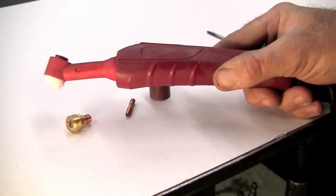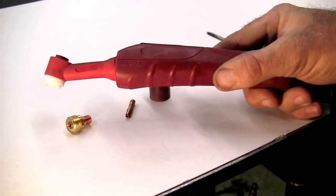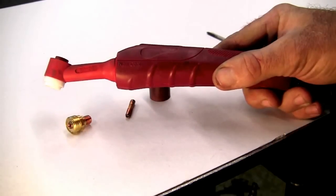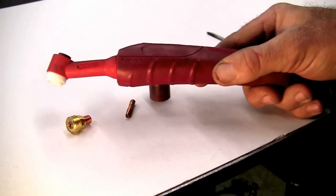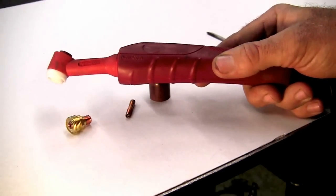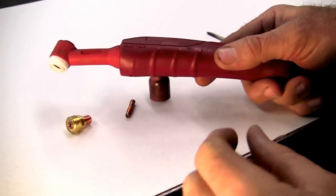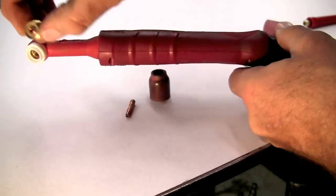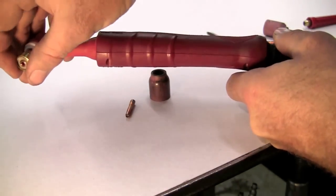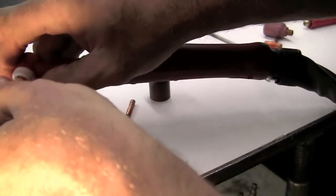Here we have the WP20 water cooled torch that comes with a lot of the longevity machines. I'll show you my setup and we'll build the torch on how I use it for most of my projects on a daily basis. I've selected a gas lens and that's 3/32nd in size. So that gets screwed into the torch.